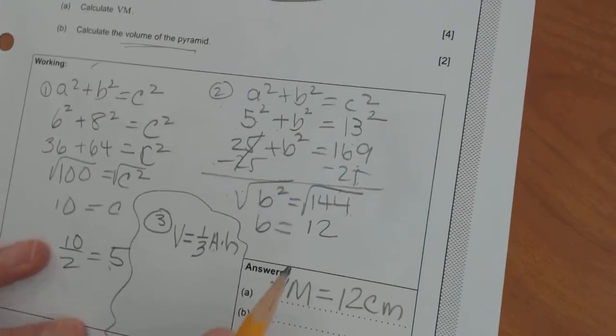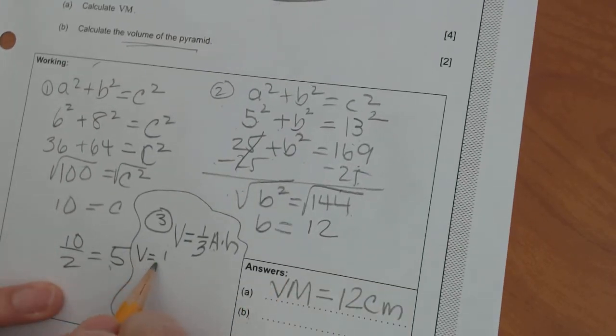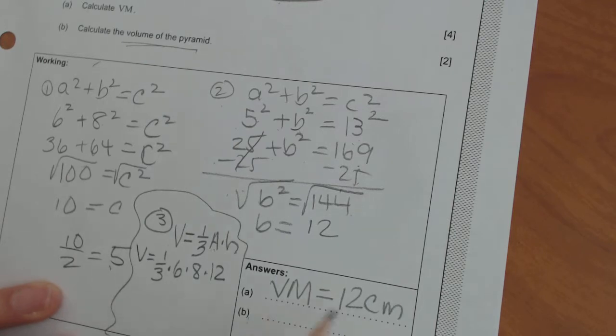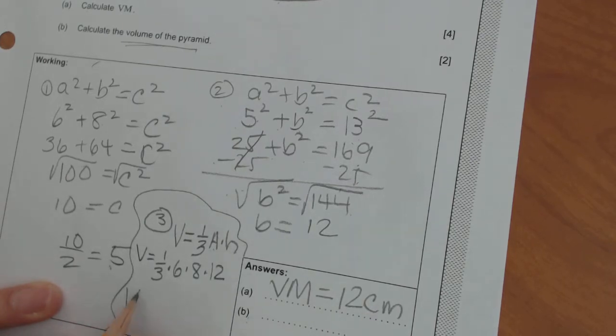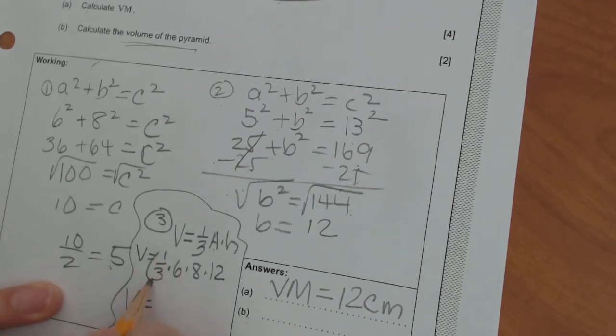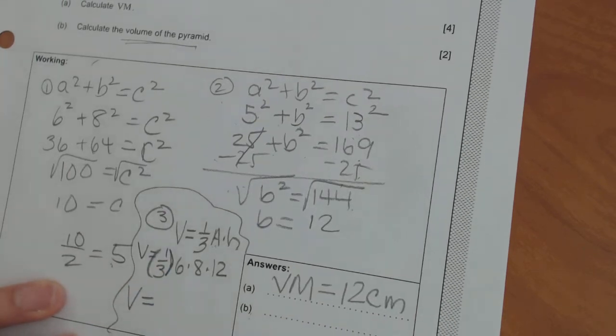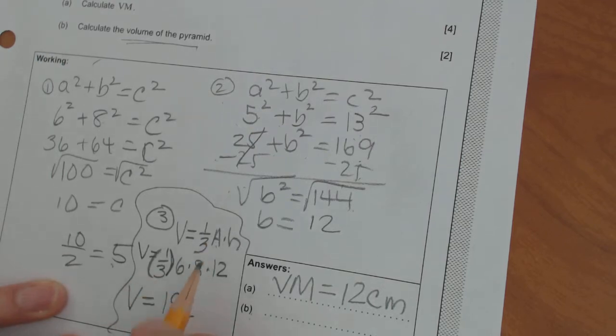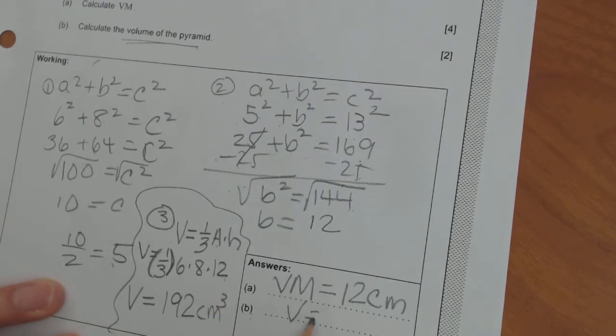So we're going to have to do the length and the width. We have that 6 and 8. So V equals 1 third times 6 times 8 times the height. That's the height of the entire pyramid, how tall it is. We found that. So volume equals, if you put this in your calculator, I would throw parentheses around this fraction, 1 third. You're going to get 192. Since there's three dimensions, length, width, and height, this is going to be centimeters cubed. So our volume is 192 centimeters cubed.